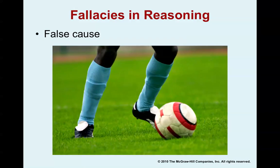The fallacy of false cause occurs when you assume that because events occur close together in time, they are related as cause and effect. For example, a person may say: 'Our soccer team has lost every time our players wore blue socks, and when they wore white socks they won. Therefore, our players should never wear blue socks again.' There's absolutely no proof that wearing blue socks caused the losses.